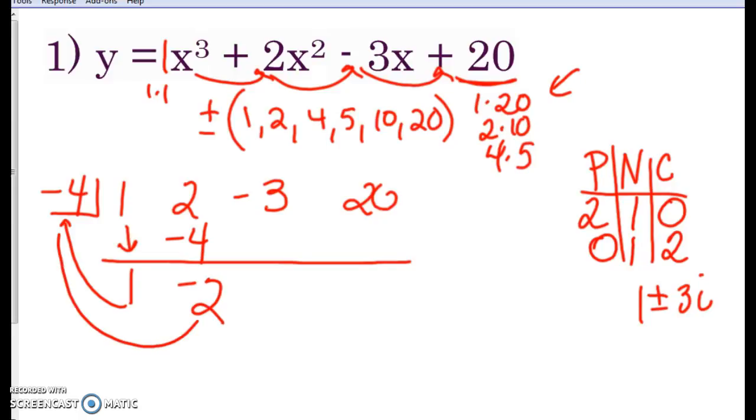Multiply. Negative 2 times negative 4. You get 8. Combine those. We've got 5. Times that negative 4. Negative 20. We've got the zero that we wanted. So that means negative 4 is the root.